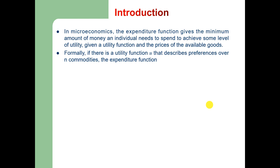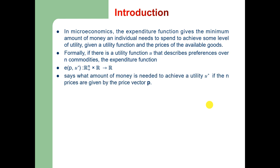Formally, if there is a utility function U which describes preferences over N commodities, the expenditure function can be written as E of P and U-star, and it says what amount of money is required to achieve a utility shown by U-star if the N prices are given by the price vector P.